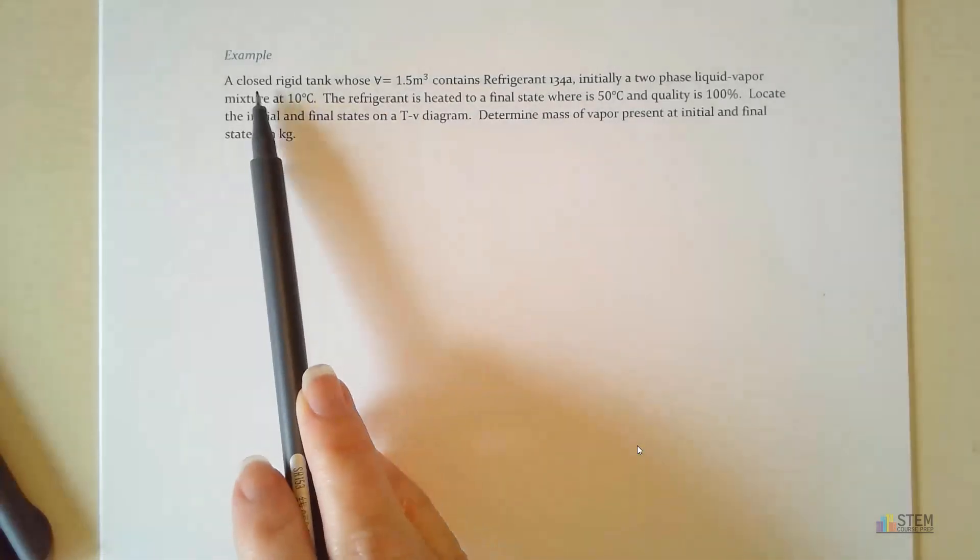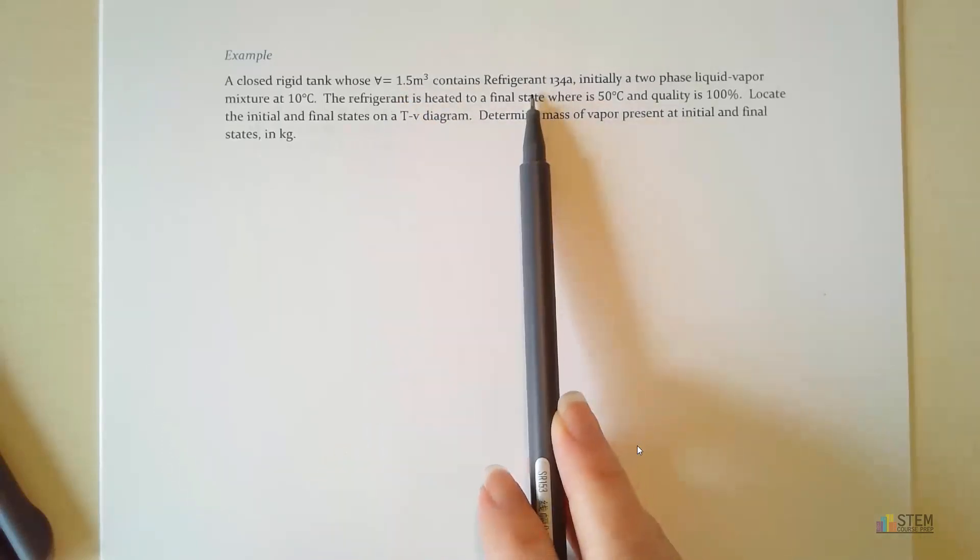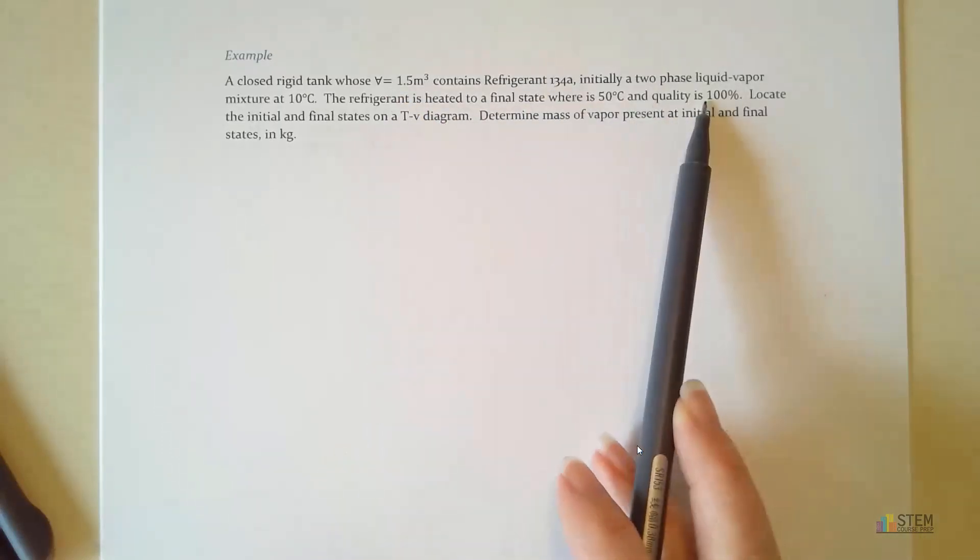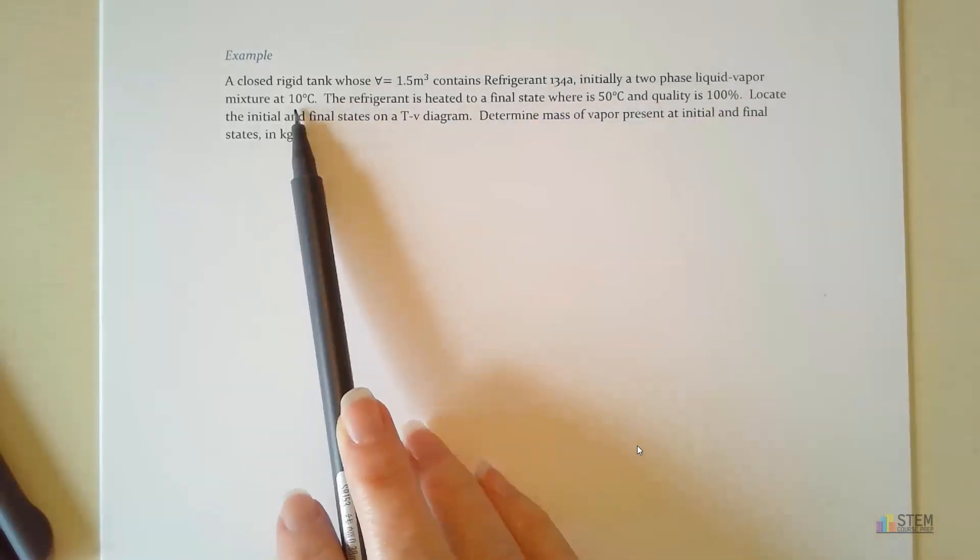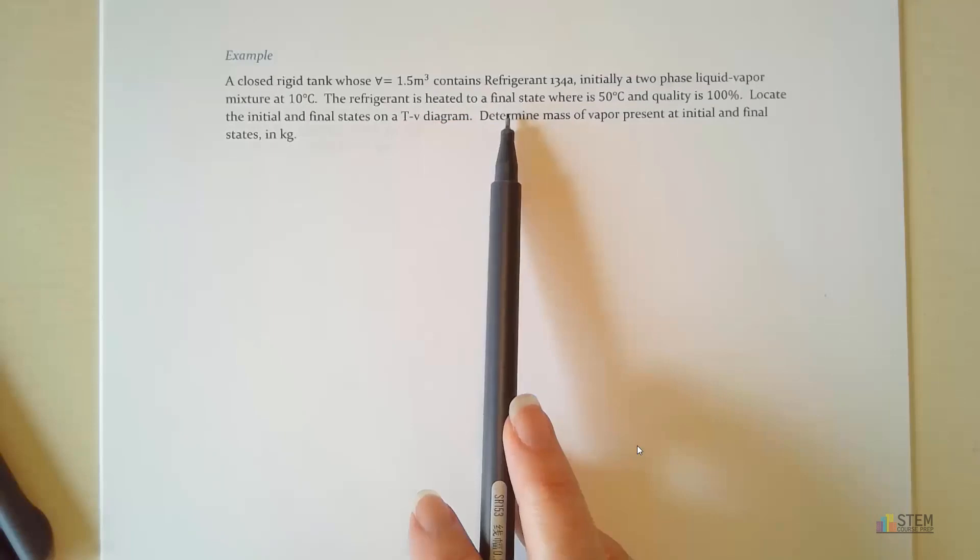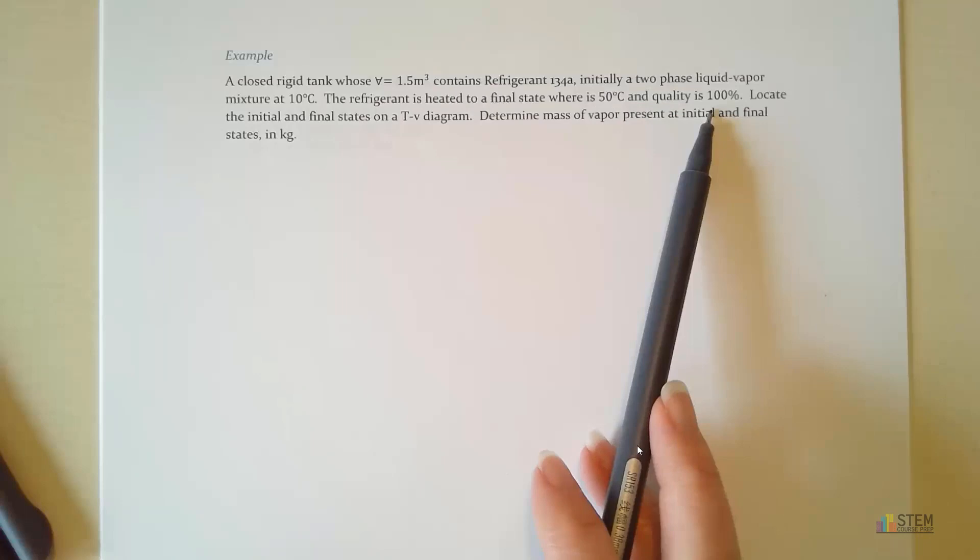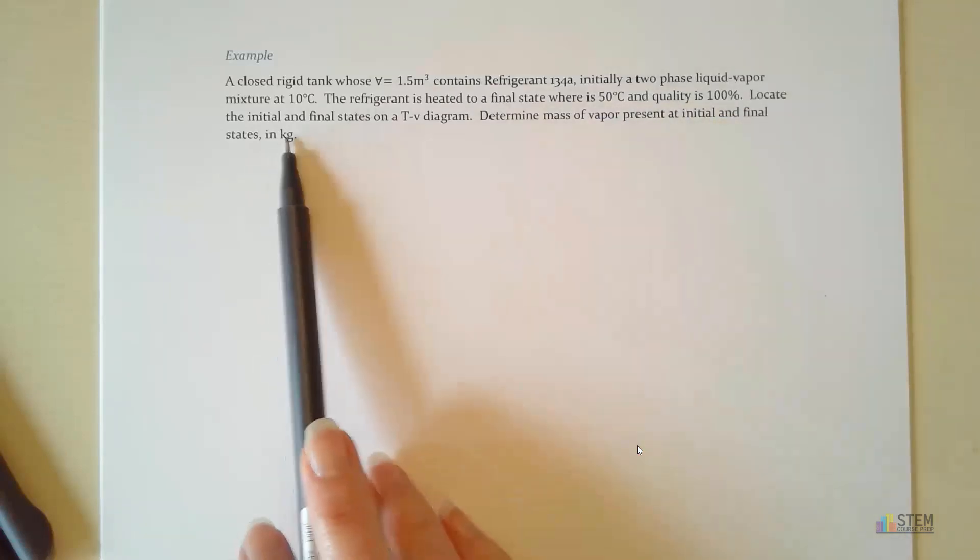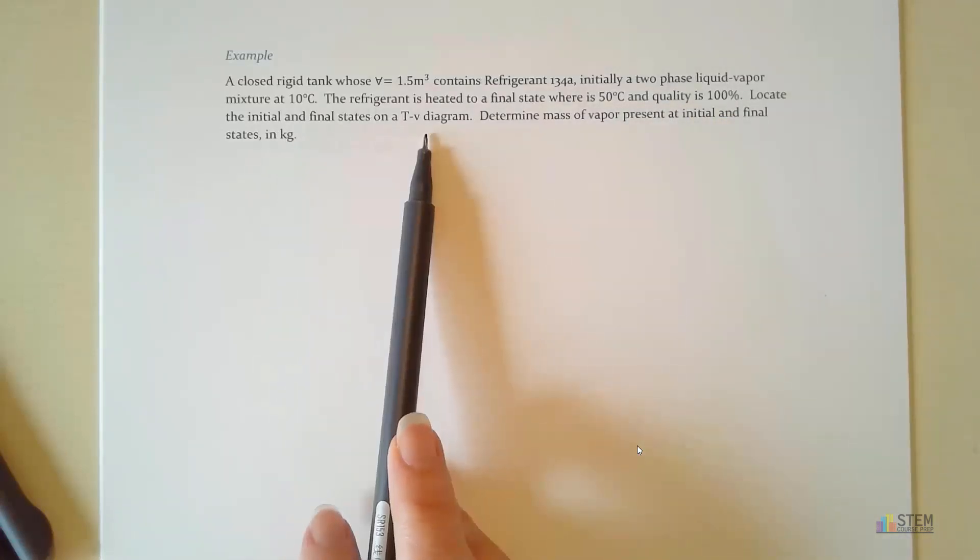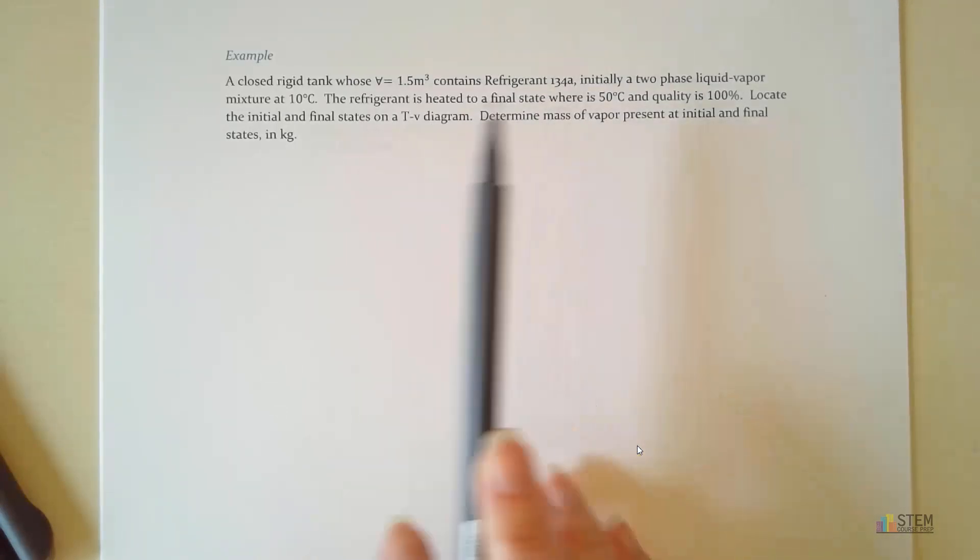Let's read through the problem. We've got a closed rigid tank whose volume is 1.5 meters cubed, contains refrigerant. It's initially a two-phase liquid vapor mixture at 10 degrees Celsius, and the refrigerant is heated to a final state where temperature is 50 degrees Celsius, quality is 100%. We're going to locate the initial and final states on a T-V diagram and find the mass of the vapor present at the initial and final states in kilograms.